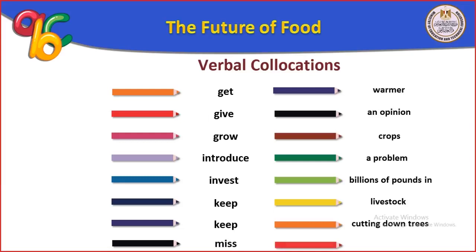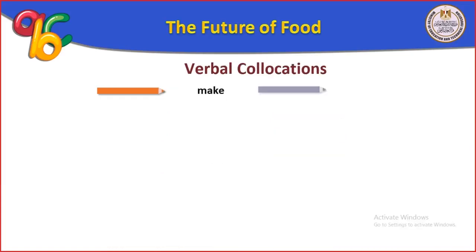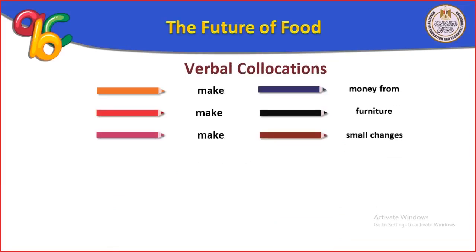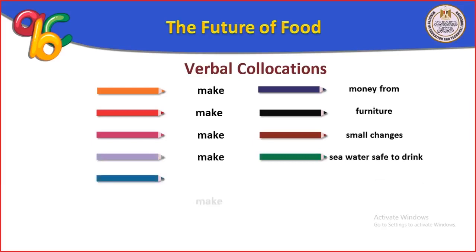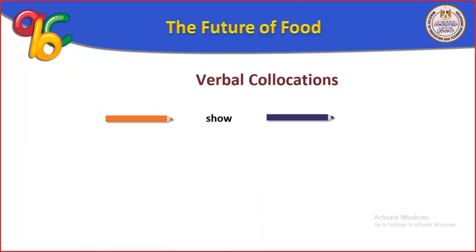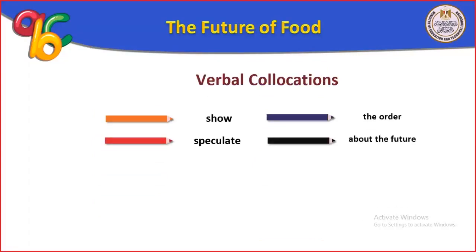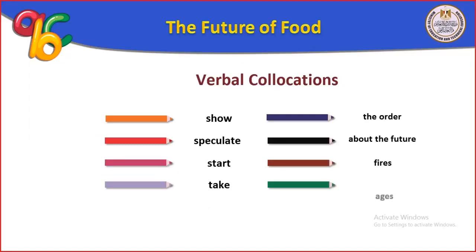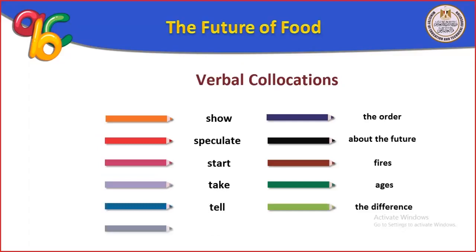Make money from. Make furniture. Make small changes (يحدث تغييرات صغيرة). Make sea water safe to drink. Make much healthier. Offer the best solution (يقدم أفضل الحلول). Produce gases. Save money. Show the order. Speculate about the future (يخمن أو يتنبأ بالمستقبل). Start fires. Take ages (يأخذ عصوراً). Tell the difference. Write a summary (يكتب ملخص).